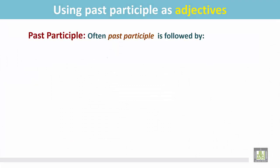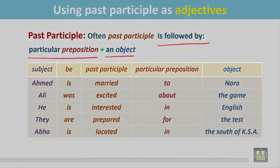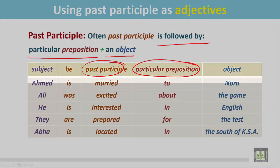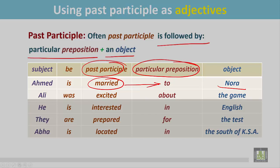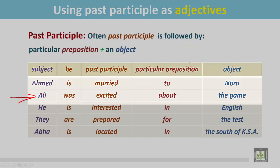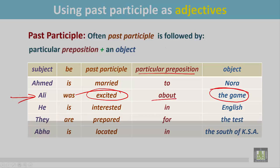The past participle is often followed by a particular preposition and an object. This table shows that the past participle is followed by a particular preposition. For example: Ahmed is married to Nora — here 'to' is the preposition and 'Nora' is the object. Another example: Ali was excited about the game — 'excited' is the past participle, followed by the preposition 'about' and the object 'the game'.